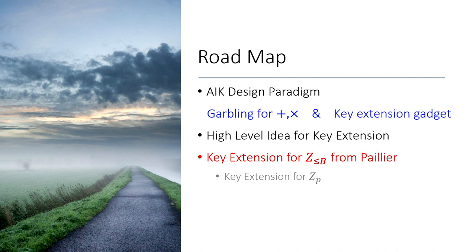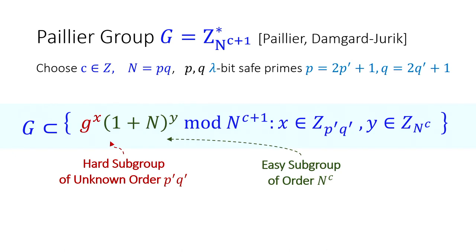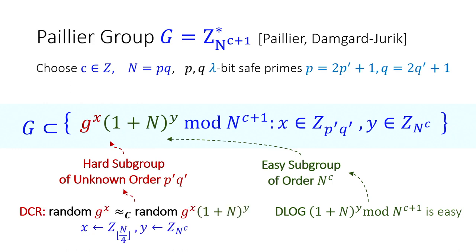To instantiate this idea from Paillier, the Paillier group is defined as Z* modulo n^(c+1), where c is an integer and n is the product of two safe primes. The important fact is that the subgroup of quadratic residues factors into a hard subgroup and an easy subgroup. We encode messages in the exponent of the easy subgroup where the discrete log is easy, and hide the easy component using a hard group component. Security relies on the DCR assumption.